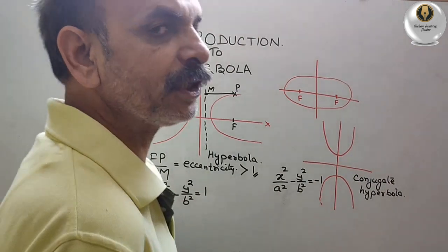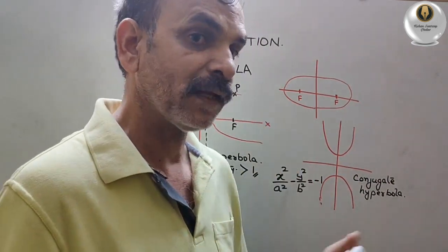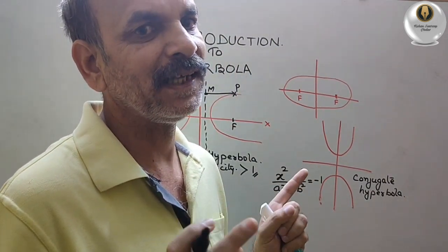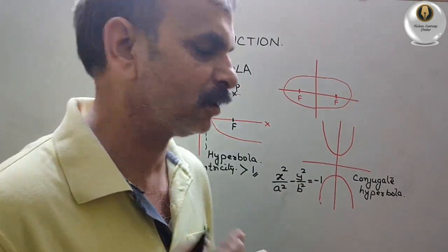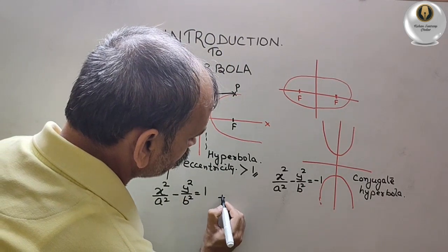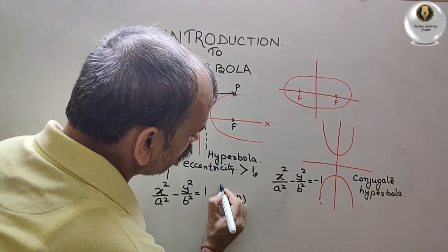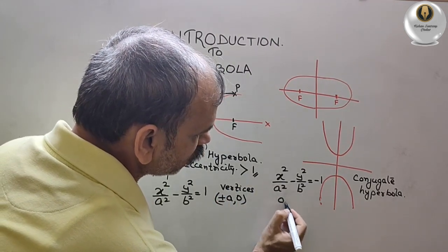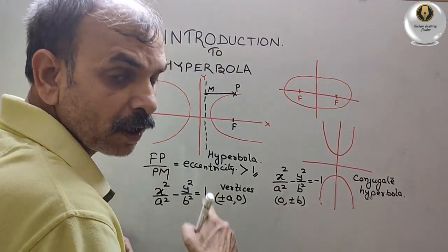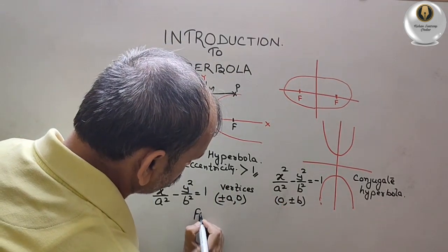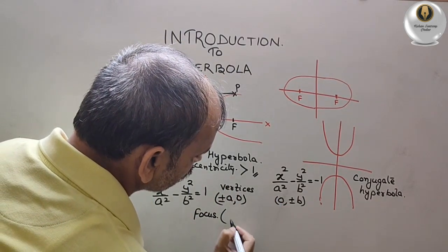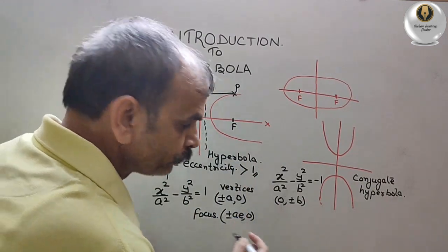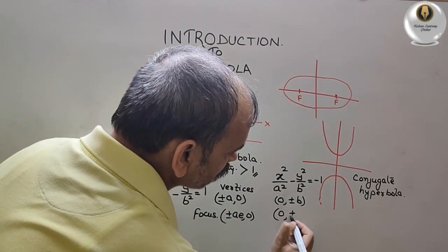The remaining measures we have taken in ellipse, we take those only here as well. Vertices: here it will come as (±a, 0) — that is your vertices for the hyperbola. And in the conjugate hyperbola, it will be (0, ±b). Now, focus: focus is (±ae, 0) as in ellipse, same. For the conjugate, here it is (0, ±be).